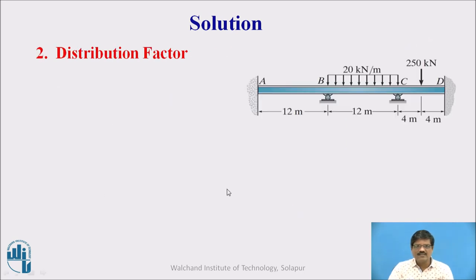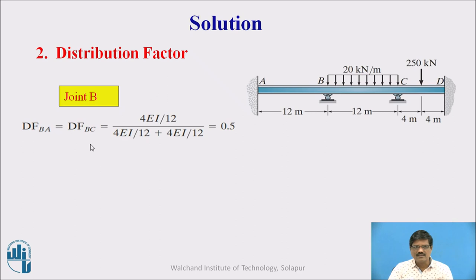Then we have to calculate the distribution factor. As we are aware the distribution factor is nothing but the ratio of the stiffness of the member to the stiffness of the joint. So if I consider joint B here the distribution factor BA and BC will be the stiffness of the member divided by stiffness of the joint. So denominator is the stiffness of the joint, numerator is the stiffness of the member. The ratio is 0.5.